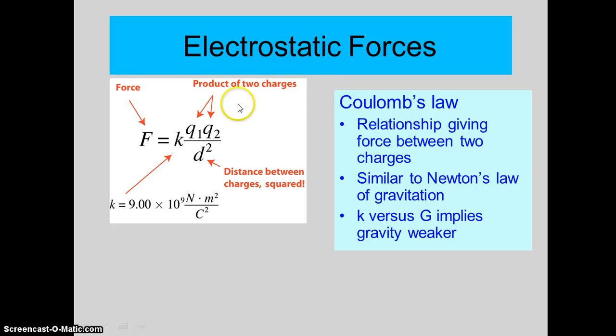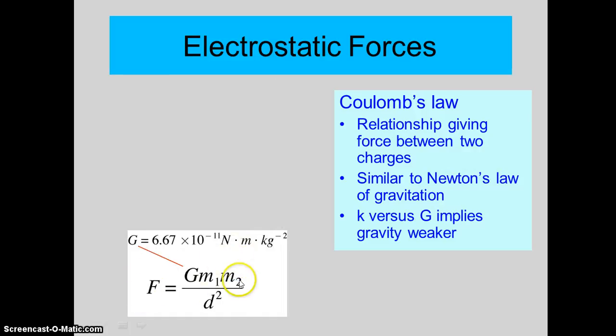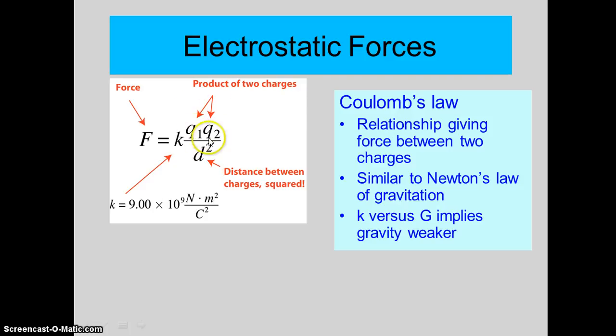It's a good idea to point out that this formula takes on the same shape as Newton's Law of Universal Gravitation. When two objects attract each other due to gravity, there's a universal constant, and they are divided by the distance between them squared. And notice for charges, it's the product of the two charges divided by the distance between them squared.